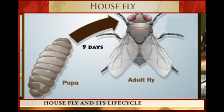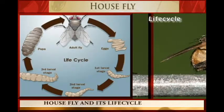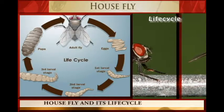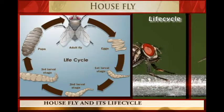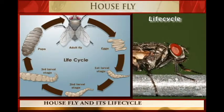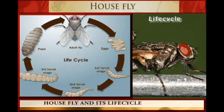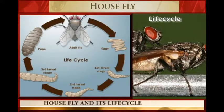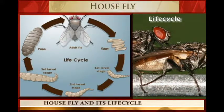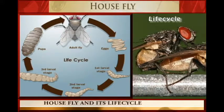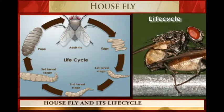After 12 days the life cycle begins again. The life cycle of a house fly undergoes four stages, and therefore we say that it undergoes complete metamorphosis.